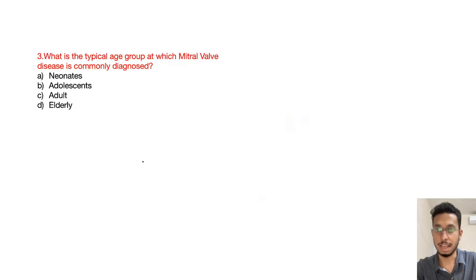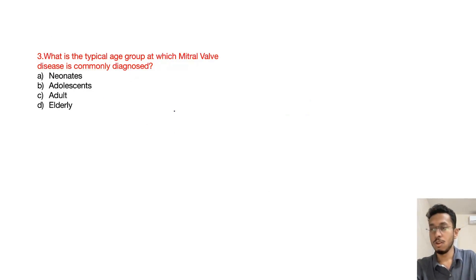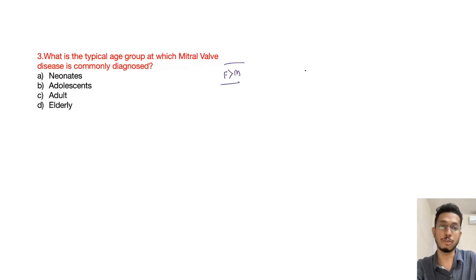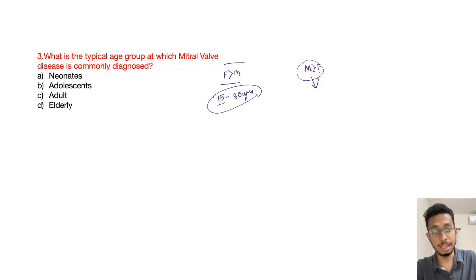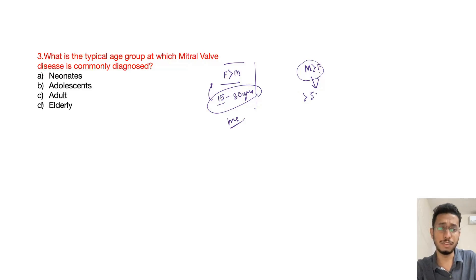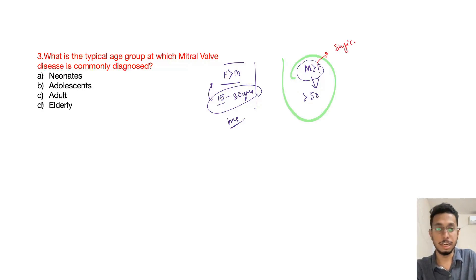The next question is about clinical features: what is the typical age group at which mitral valve prolapse is commonly diagnosed? Mitral valve prolapse is usually more common in females than males, but if surgery is required, it is more commonly needed in males. Age of presentation is usually late adolescent to early adulthood, around 15 to 30 years. Males over 50 years of age are the group that most commonly requires surgical intervention.